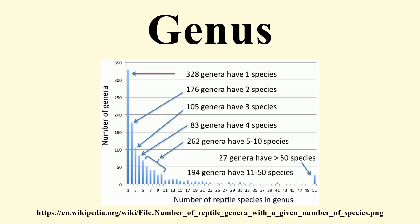The composition of a genus is determined by a taxonomist. The standards for genus classification are not strictly codified, so different authorities often produce different classifications for genera. There are some general practices used, however, including the idea that a newly defined genus should fulfill three criteria to be descriptively useful.